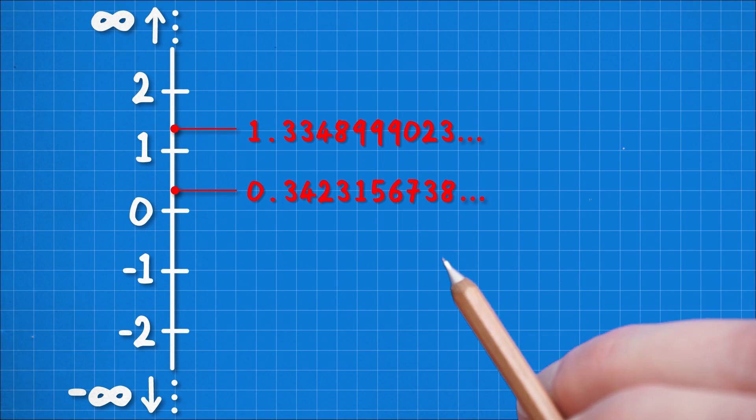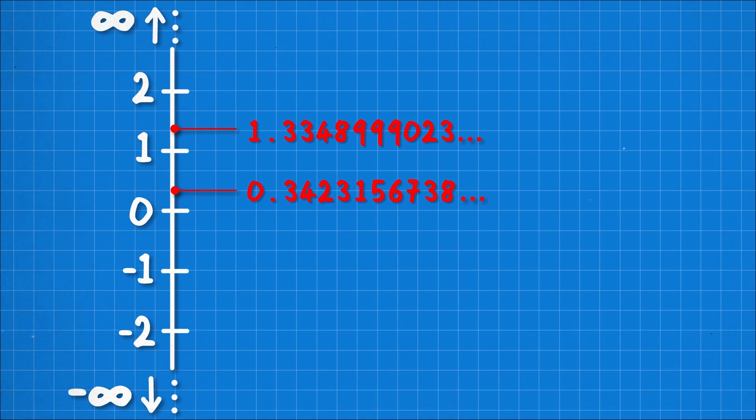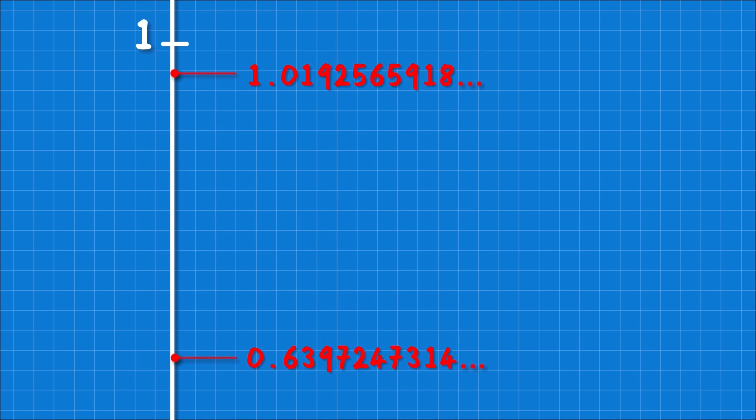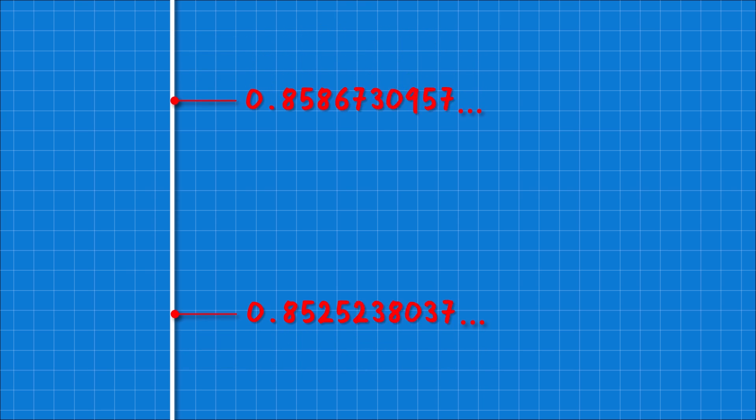Let's just pick two random real numbers, and we're going to squeeze them together to try and find the real number that's exactly in-between these two numbers. So we're going to push these two numbers together, but the only rule is they're never allowed to cross. Now, the thing is, as we move these numbers closer and closer together, they'll never actually meet,